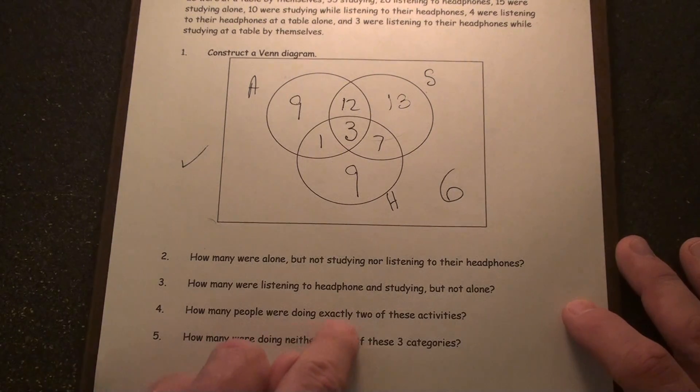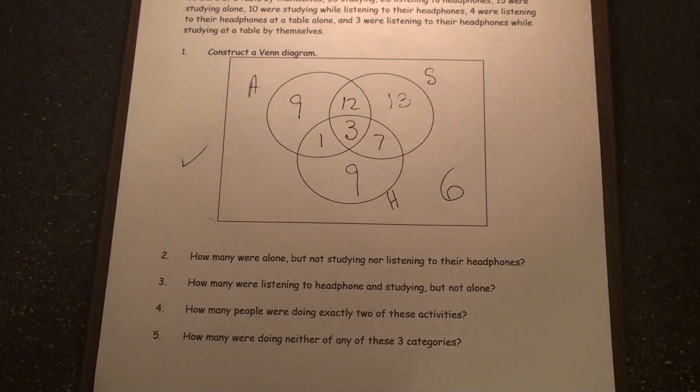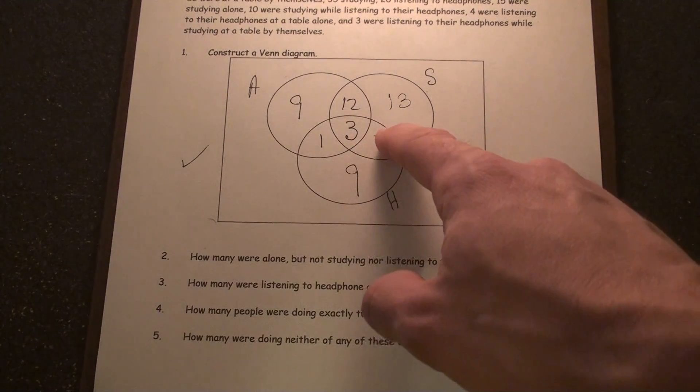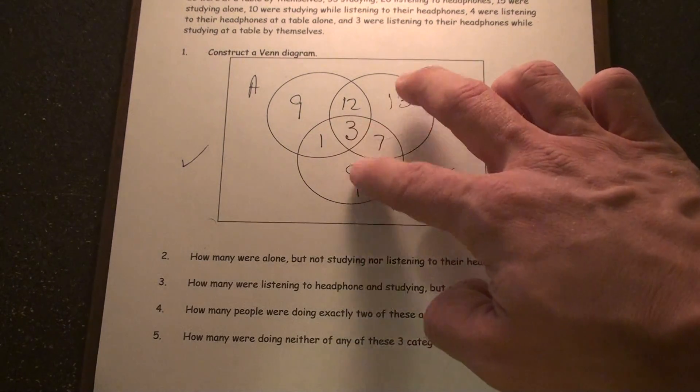How many people were doing exactly two of these activities? We're looking for exactly two, so we're looking for the intersection of just two. That would be seven doing both.